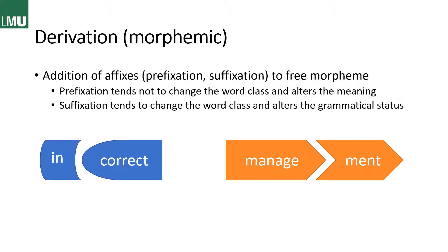In the case of prefixation, shown by the example 'incorrect,' the word class doesn't change. The prefix rather changes the meaning than the word class — we have 'correct' as the free morpheme, and when we add in- we turn it into its opposite. In the case of suffixation, we have the example 'management' as 'manage' + -ment. The word class has changed: 'manage' is a verb, and -ment makes it a noun. That mainly alters the grammatical status; the meaning is still closely related — it's just the act of managing something.